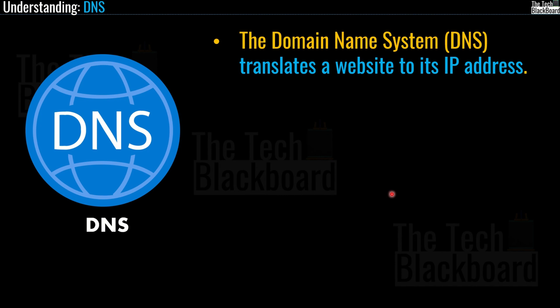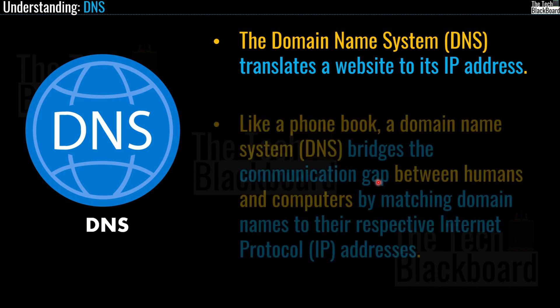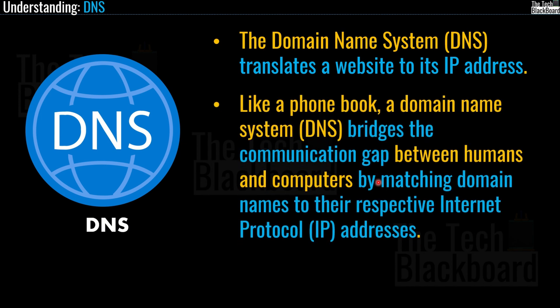All the devices on the internet — from your smartphone or laptop to the servers that serve content for massive retail websites or YouTube-like websites — find and communicate with each other using IP address numbers. When you open a web browser and go to a website, you do not have to remember and enter long numbers. Instead you just enter a domain name, for example google.com or youtube.com, and still end up at the right website. Much like a phone book, a domain name system bridges the gap between humans and computers by matching domain names to their respective IP addresses.